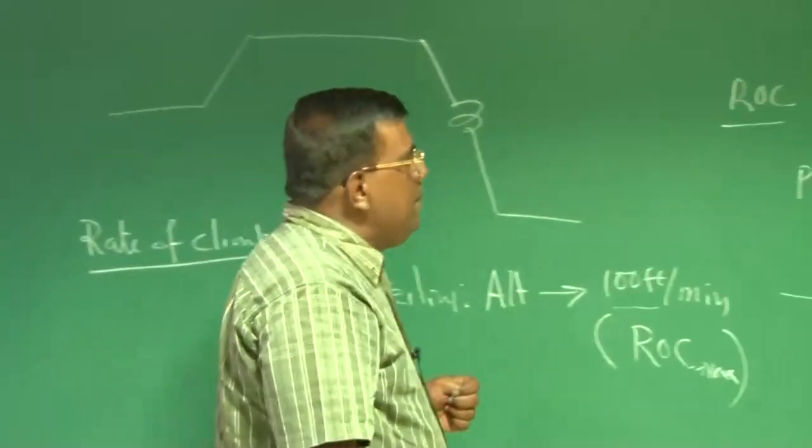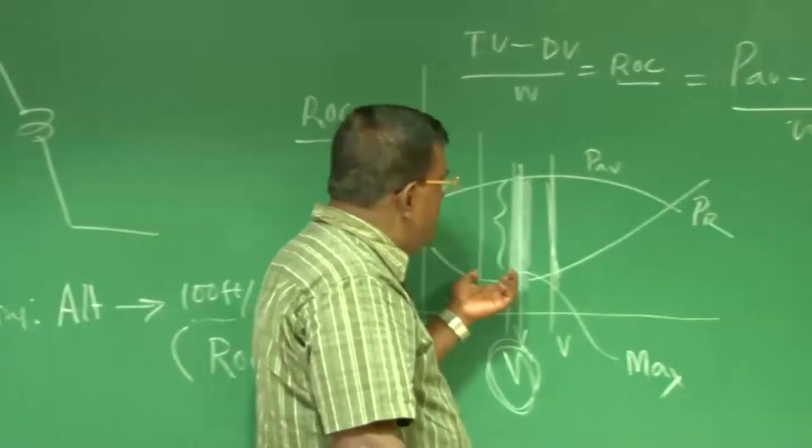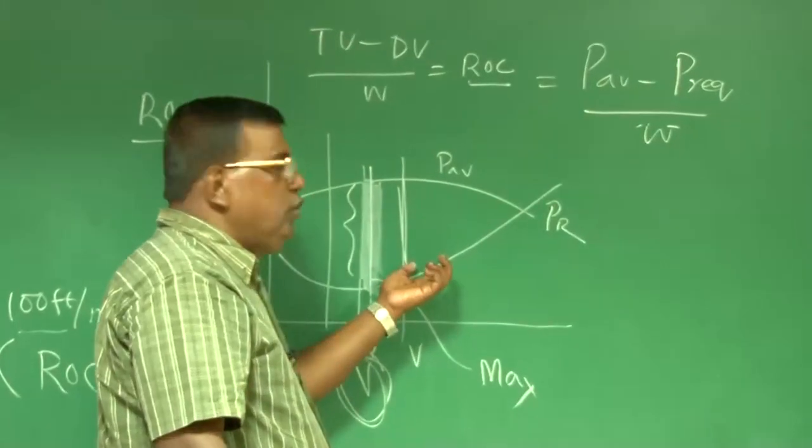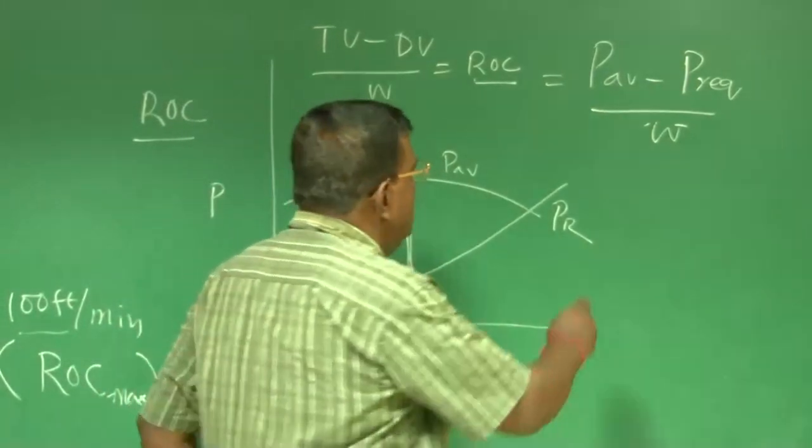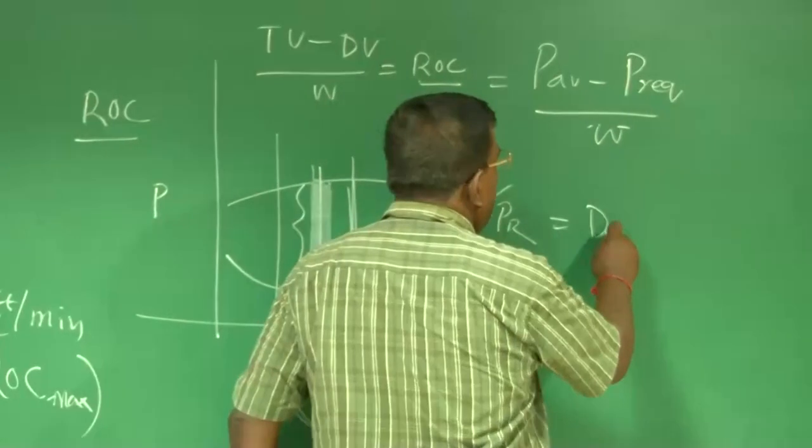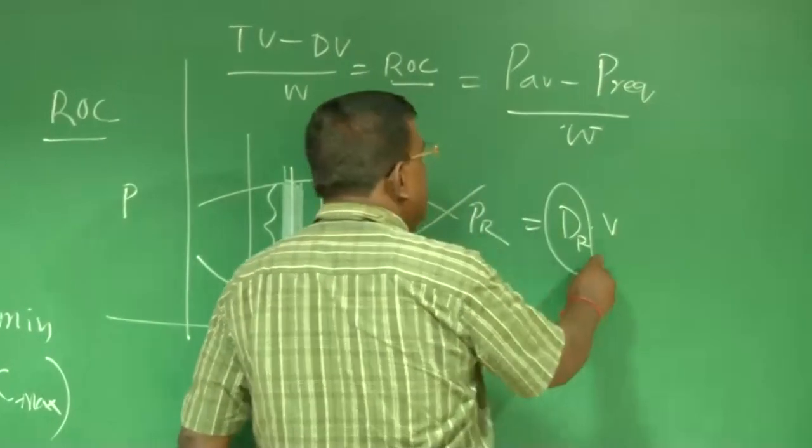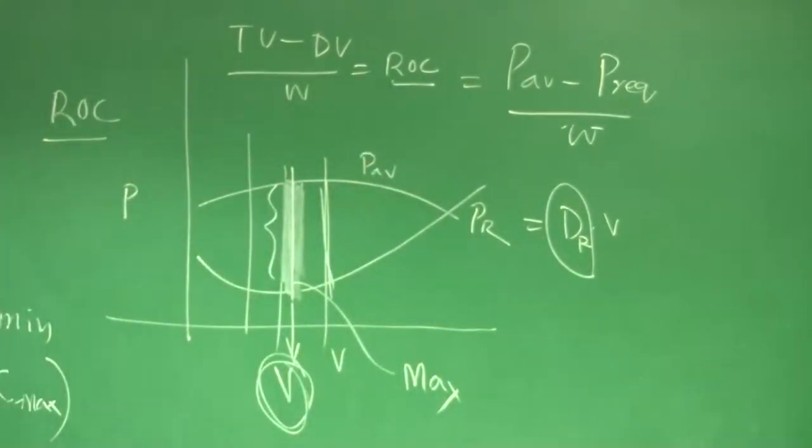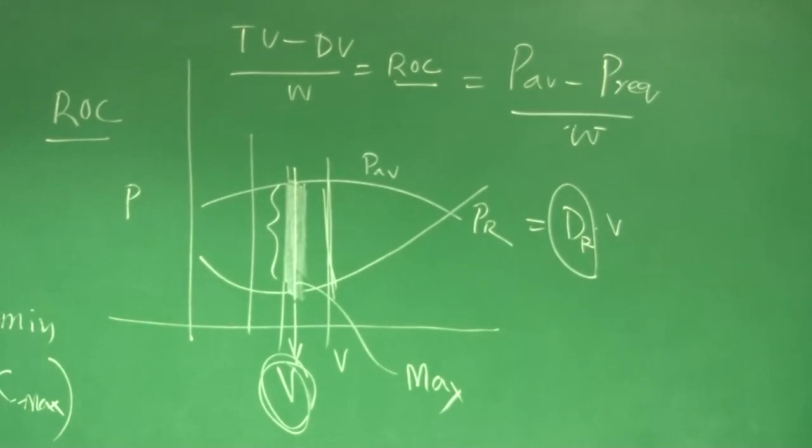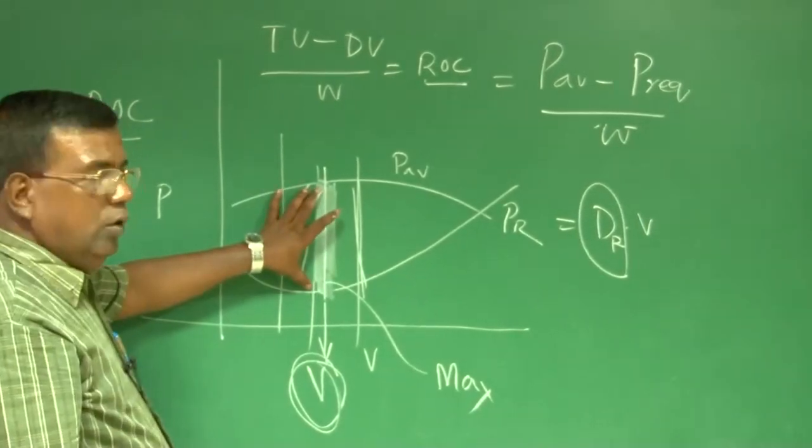Now, see, who decides the power required should be less? This is, you know, drag required into V. So, who decides drag required should be less? I repeat, if I want to make this gap more, I have two options.